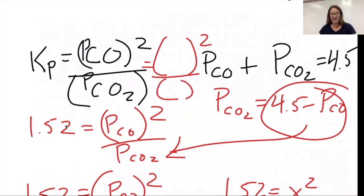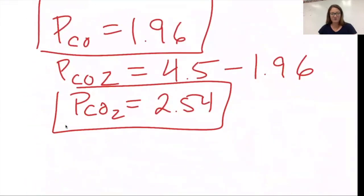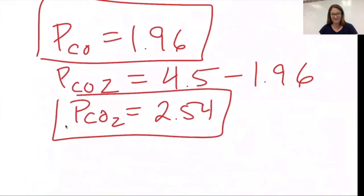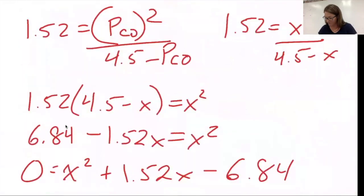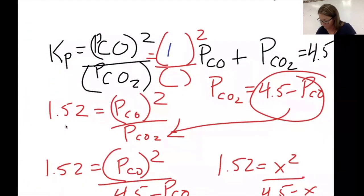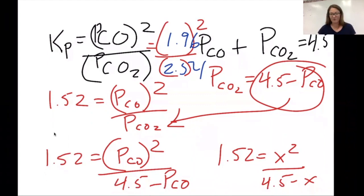I need to scroll back down to grab those values. The partial pressure of CO was 1.96 and CO2 is 2.54. 1.96 squared divided by 2.54. I get 1.51 instead of 1.52. I'm pretty happy with those answers.